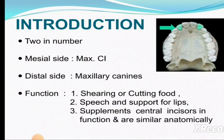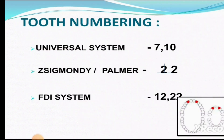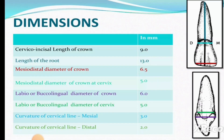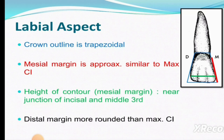The lateral incisor is very similar to the central incisor but with differences in dimensions, and its function is a little bit less. The universal numbering system is 7 and 10, Zsigmondy-Palmer notation, and FDI system 1-2 and 2-2. First evidence of calcification is at 12 months, enamel completed at 4 to 5 years, eruption sequence 8 to 9 years, and root is completed at 11 years.